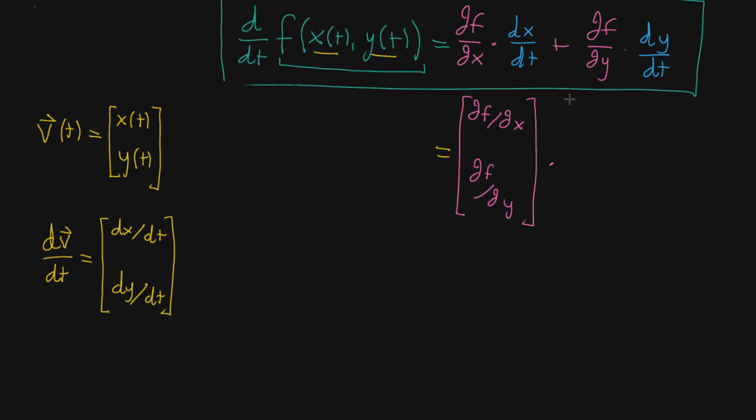So this whole thing, we're taking the dot product with the vector that contains ordinary derivative, dx dt, and ordinary derivative, dy dt. And of course, both of these are special vectors. They're not just random. The left one, that's the gradient of f. Gradient of f.